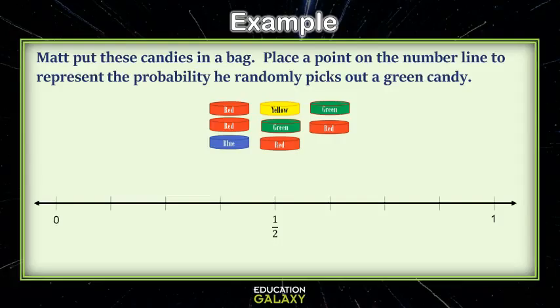So let's look at one of the probabilities on the number line. We have Matt puts these candies in a bag. Place a point on the number line to represent the probability he randomly picks out a green candy.